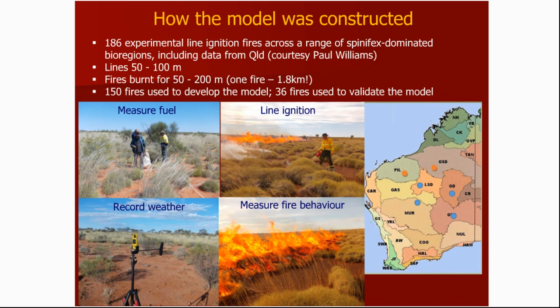Turning now to how the model was constructed — it's an empirically-based or field-based model. Over a period of 30-odd years, we've lit something like 186 experimental fires, almost all line ignition. As you can see from the map on the right, we've carried out fires in most of the desert IBRAs in Western Australia, and we've also managed to get hold of some data, thanks to Paul Williams, from some Queensland spinifex. Lines of fire at 50 to 100 metres. We allowed the fires to burn for about 50 to 200 metres. We separated out 36 of those fires and set them aside — we didn't use them in the construction of the model, but used those to validate the model.